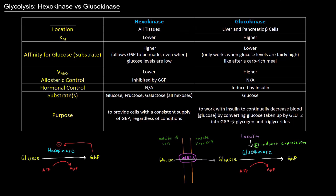Hexokinase and glucokinase are isozymes — 'iso' meaning same, 'zymes' referring to enzymes. They're not the same enzyme, but they both catalyze the same reaction: the first reaction of glycolysis, which converts glucose into glucose 6-phosphate. Both hexokinase and glucokinase catalyze that reaction.